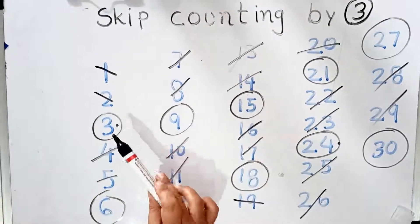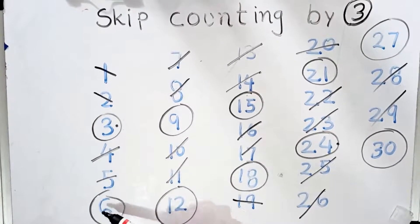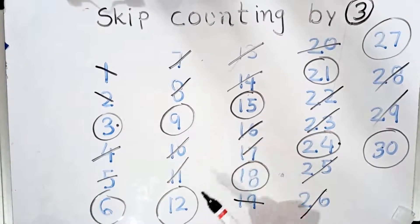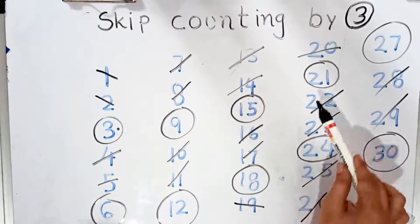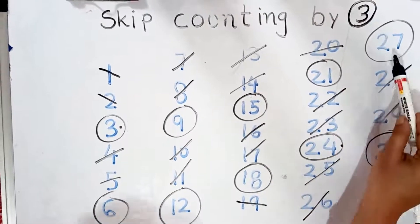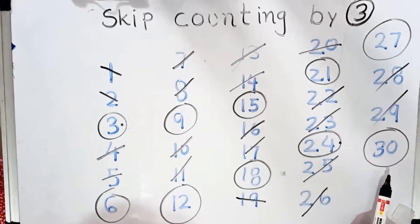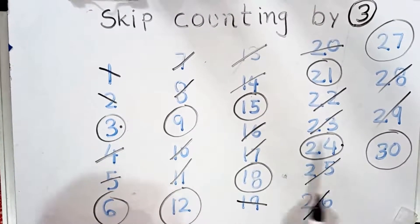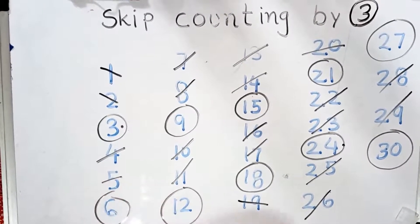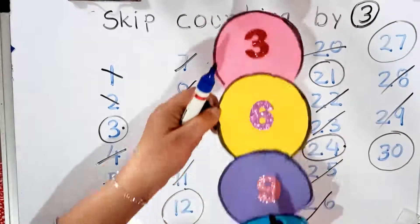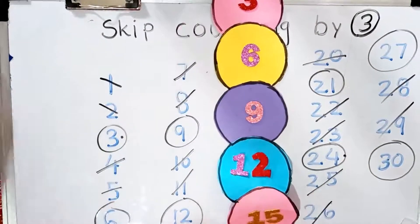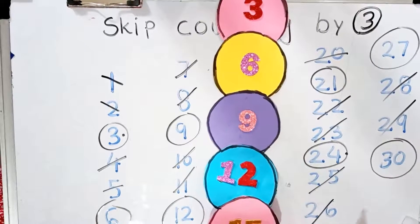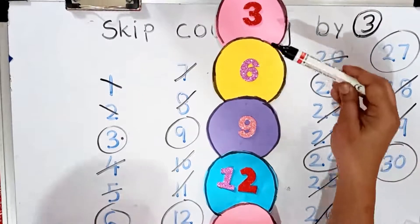These are the numbers: 3, 6, 9, 12, 15, 18, 21, 24, 27, and 30. These are the skip counting by 3 numbers. If you learn this number sequence and remember it, you can do the table of 3 very easily. So, repeat after me.